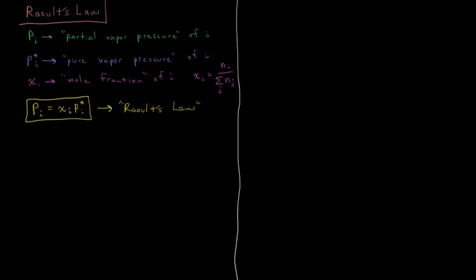In this video we're going to discuss Raoult's Law and ideal solutions. Let's define some terms. We have Pi, the partial vapor pressure of i — that's the vapor pressure of component i above a solution of which i is one of the components. We have Pi star, which is the pure vapor pressure of i, or what the vapor pressure would be above a pure liquid of i which is in equilibrium with the vapor.